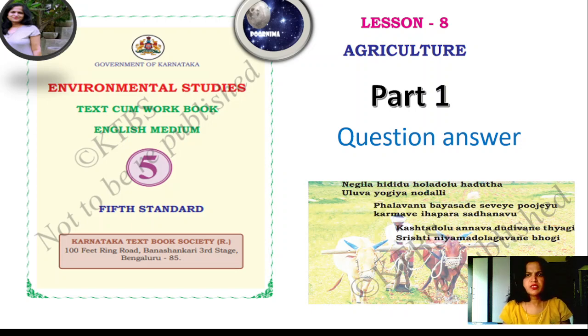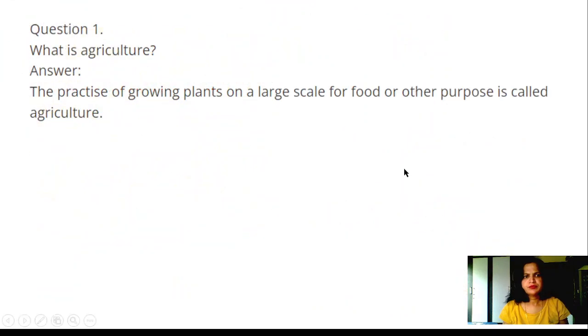Environmental Studies 5th Standard, Lesson 8: Agriculture Question Answer. Question 1: What is agriculture? Answer: The practice of growing plants on a large scale for food or other purposes is called agriculture.